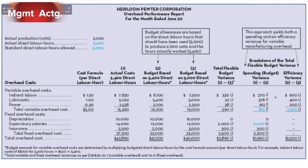We had 5,400 direct labor hours, but we apply overhead based on the standard, so we're applying 5,000 times $3, which is $15,000. Based on 5,400 hours, we should have applied $16,200. That $1,200 tells us that we under-applied overhead, and under-applied is unfavorable.